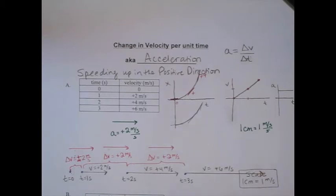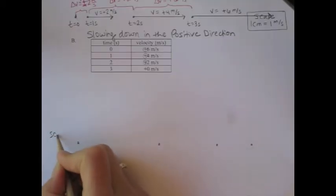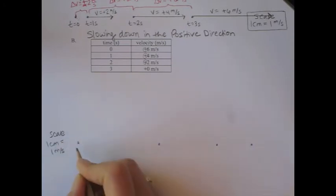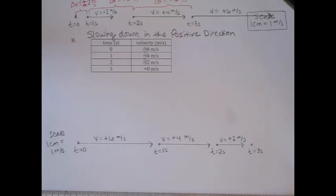For object B, the magnitude of the velocity is getting smaller, so this object is slowing down, but the velocities are all positive, so it's still moving in the positive direction. We're analyzing an object that is slowing down in the positive direction. Using a scale of one centimeter equals one meter per second, go ahead and draw your motion map — pause the video and check back.